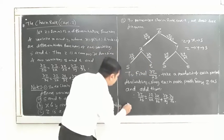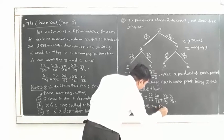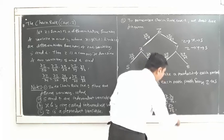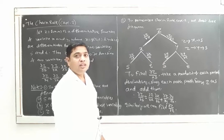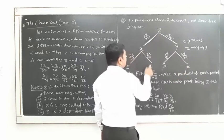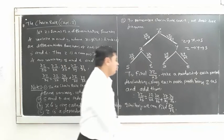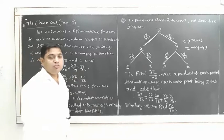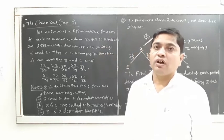Similarly, we can find ∂z/∂t. Again, take the product of partial derivatives along each path from z to t — there are two paths — and add them together. We then use this chain rule to differentiate composite functions and solve problems.